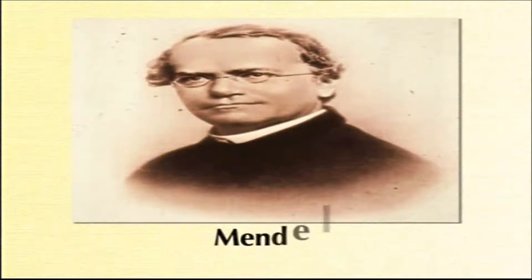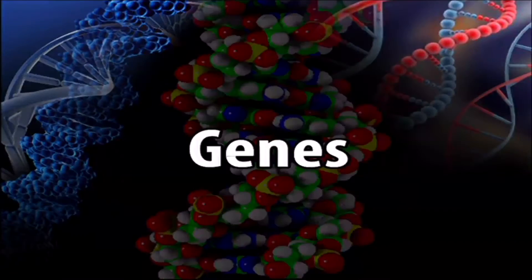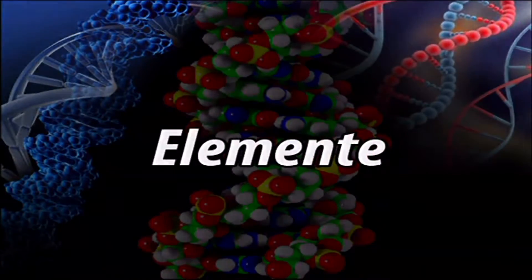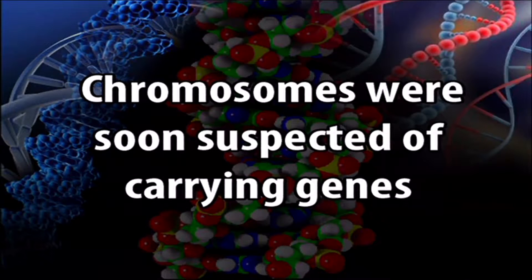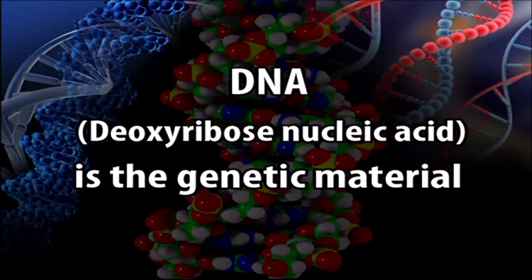Mendel's contribution helped establish that heredity was controlled by factors — what we nowadays call genes, though he called them elements. Later, chromosomes were found to be the carrying agencies for these genes or factors. Subsequently, a series of experiments yielded enough scientific proof that the macromolecule DNA, deoxyribose nucleic acid, is the genetic material. Mendel's outstanding achievement was to demonstrate that inherited characters are determined by discrete factors passed from one generation to the next, re-assorted separately in each generation.